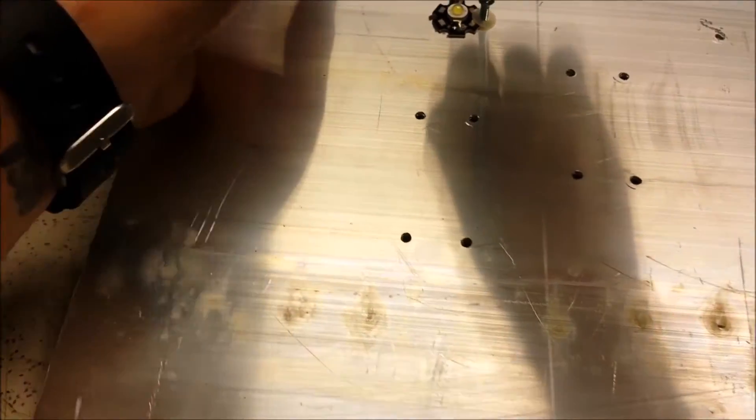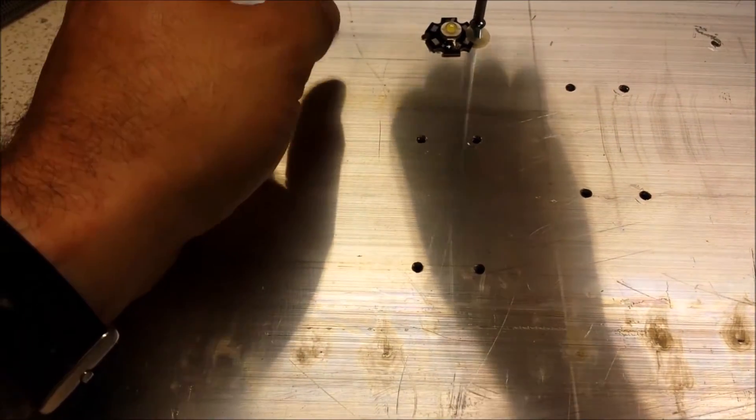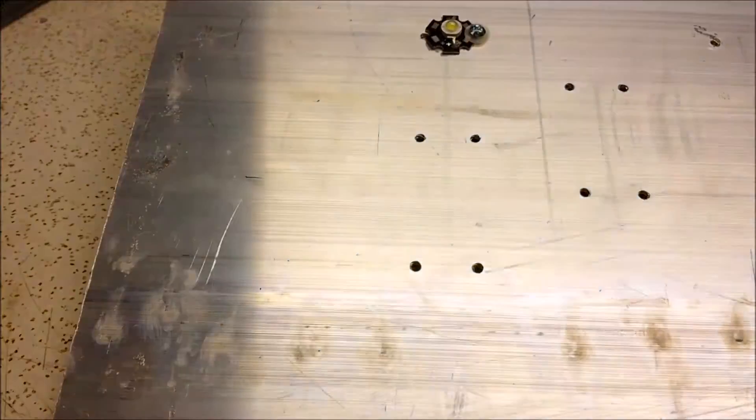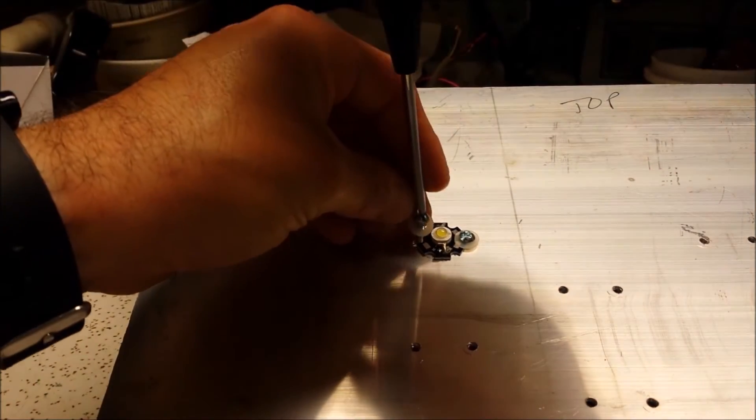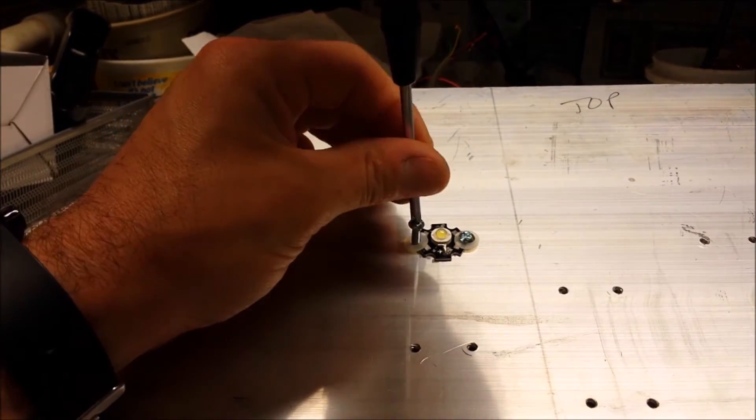So now we have the heat sink goop on there, we have our insulating washer, we'll just put this screw in. And what I found, if you just put the first one in and leave it somewhat loose, it allows you to get the other one lined up here.